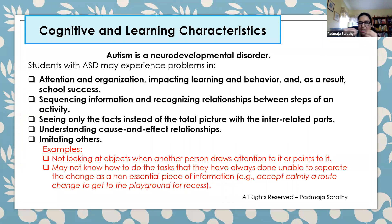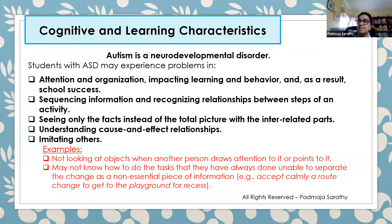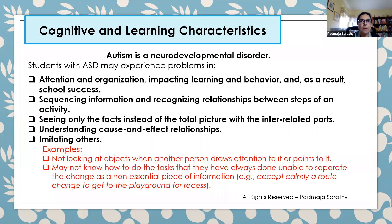They may have issues with sequencing — putting together information and recognizing the relationship between steps of an activity. They may only see the fact, not the larger context. If they see a picture, they see just the picture, not the interrelated parts or related information. They don't see how their actions cause a result or reaction in others — for example, when they drop themselves to the floor, how does that behavior impact others? Cause and effect — they don't see that relationship.